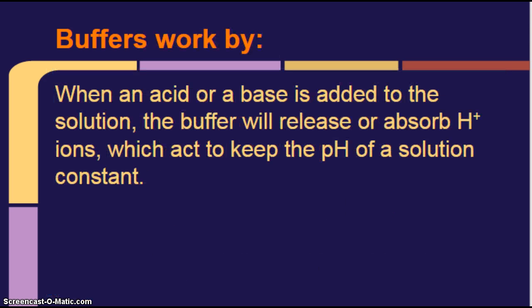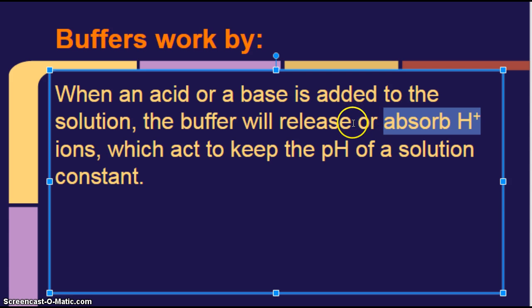Buffers work by - so how they work? When an acid or a base is added to the solution, the buffer will release or absorb H+ ions, which act to keep the pH of a solution constant. Okay, so the buffer is either going to absorb the H+ ions, if an acid was added, or it's going to release it if a base was added, and that's what's going to cause it to neutralize what was added and keep the pH constant or the same.